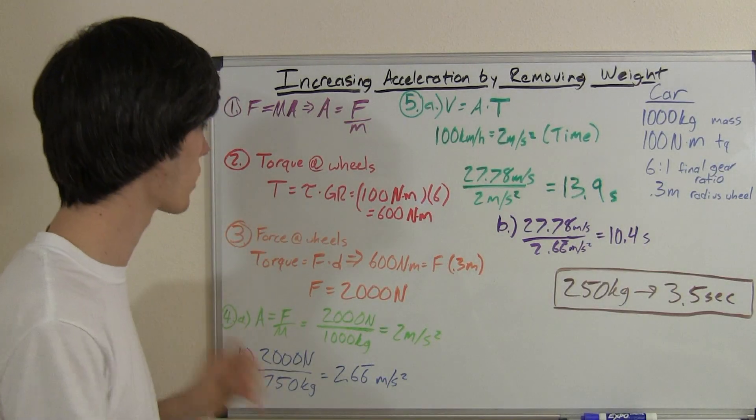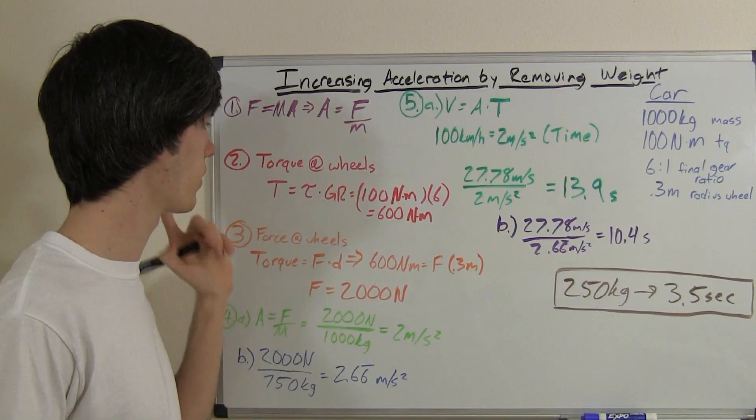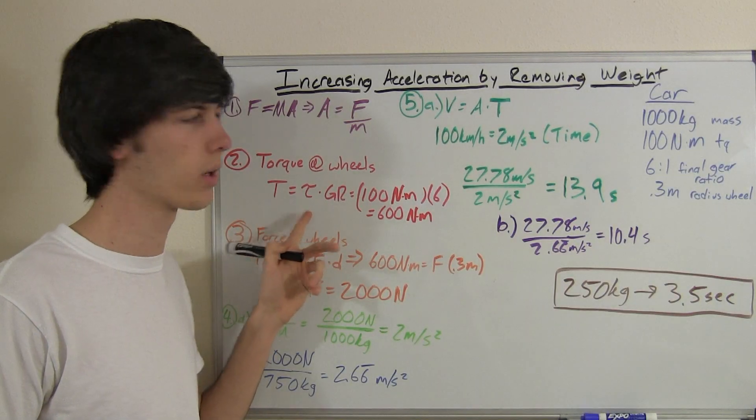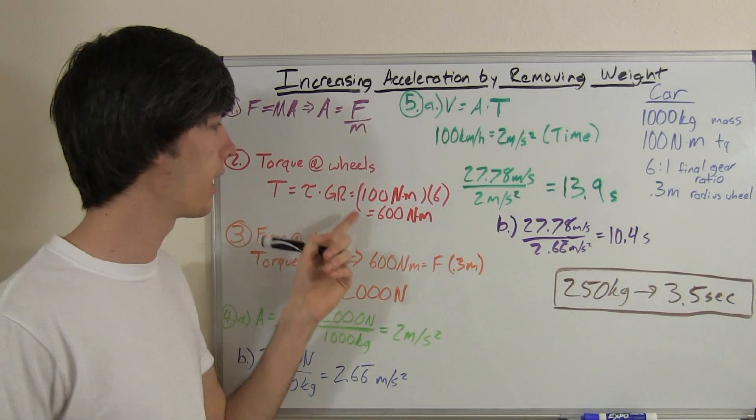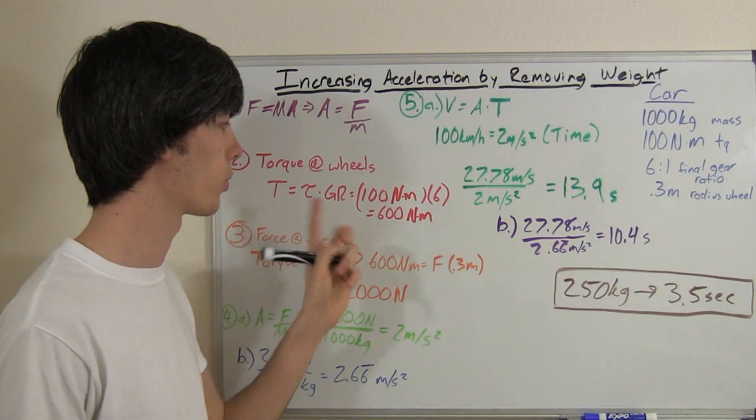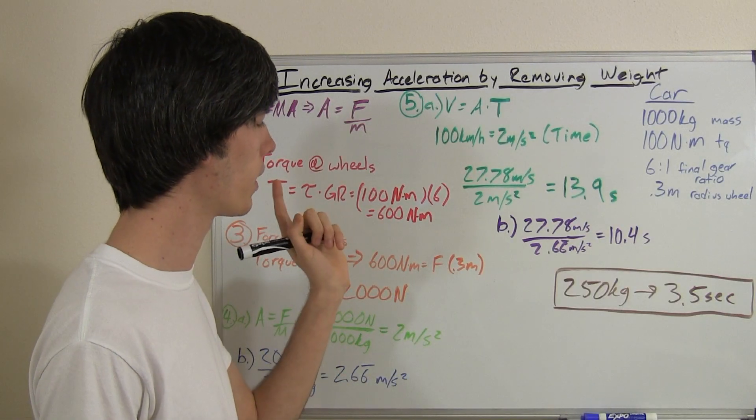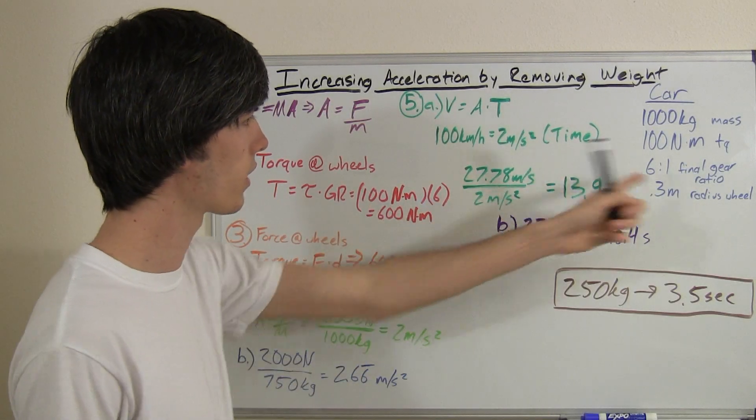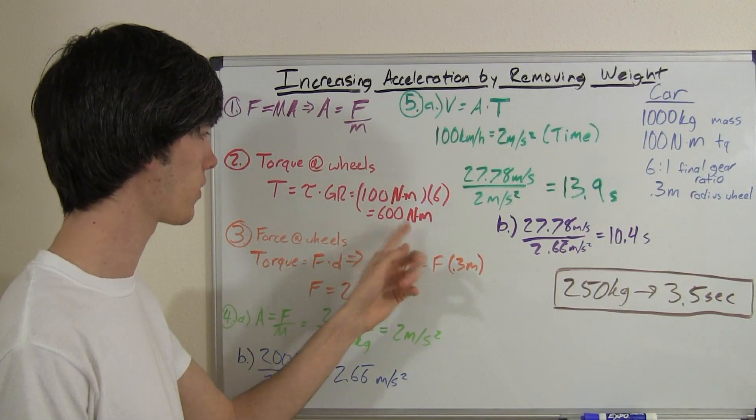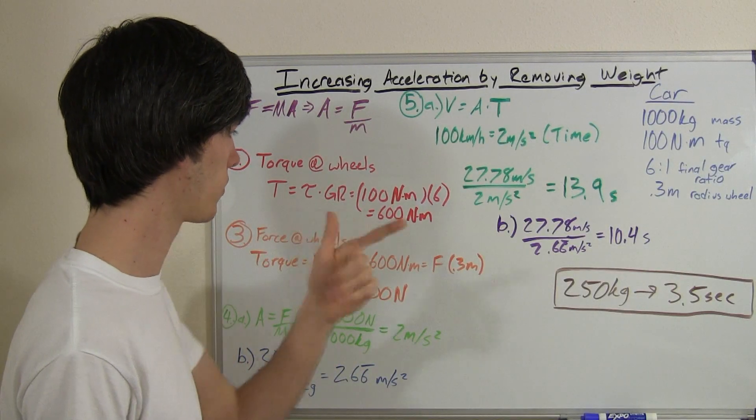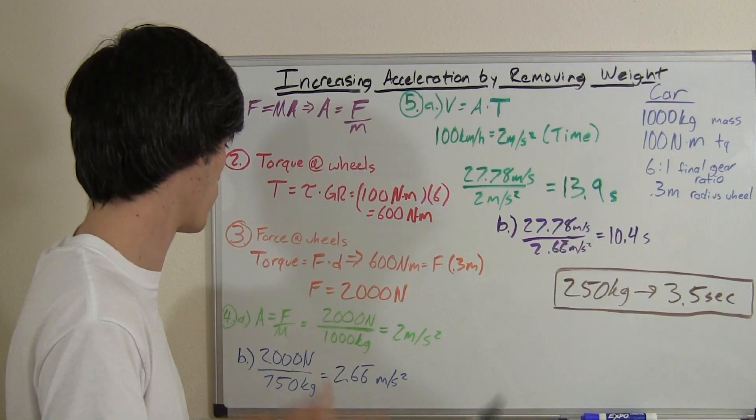Step 2 is find the torque at the wheels. Now this is very simple. All we have to do is multiply the torque created by the engine by the gear ratio. So we've got 100 newton meters. We're multiplying that by 6 for our gear ratio, and we'll have 600 newton meters sent to those rear tires or driven tires.